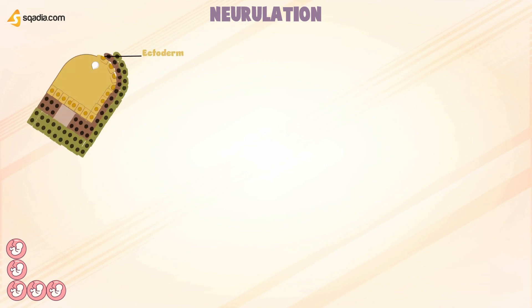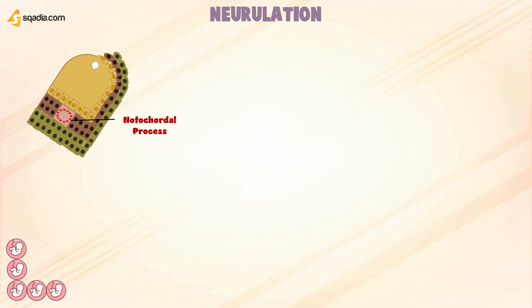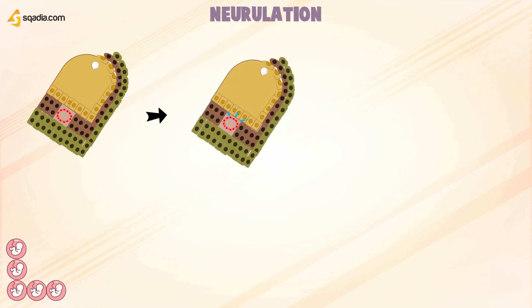As we have discussed, this is ectoderm, this is mesoderm, and this is endoderm. Mesoderm cells that migrate anteriorly and accumulate in the midline form the notochordal process, while this is the primitive node. The notochordal process releases growth factors that cause ectoderm proliferation — this process is called ectodermal proliferation. The ectoderm then thickens to form the neural plate.